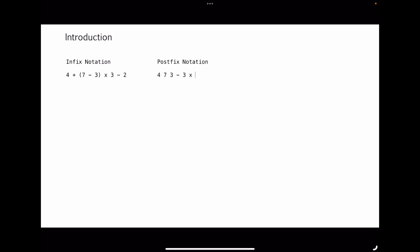Now let's look at another example. This is called postfix notation, written as: 4, 7, 3, minus, 3, multiply, 2, minus, plus — which at a glance doesn't make any sense at all. But these two expressions are actually the same. The later case, postfix notation, is actually Reverse Polish Notation.